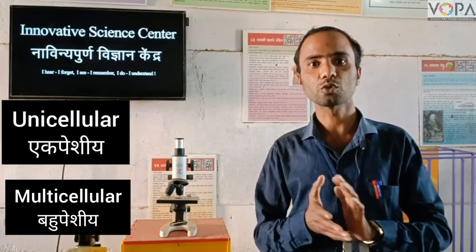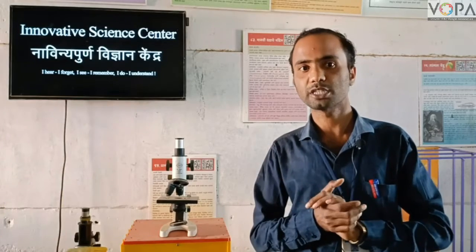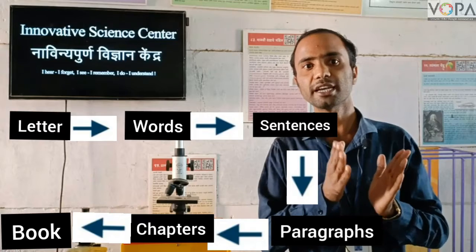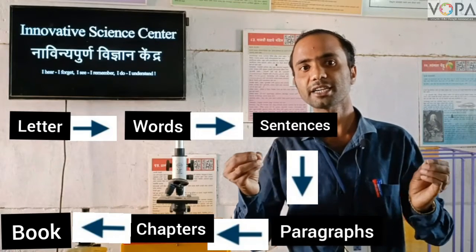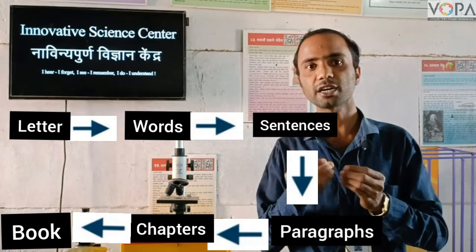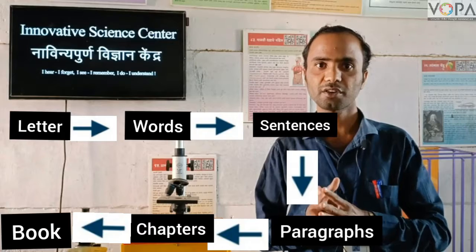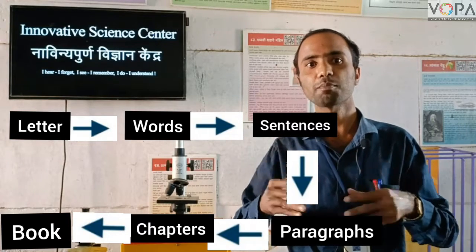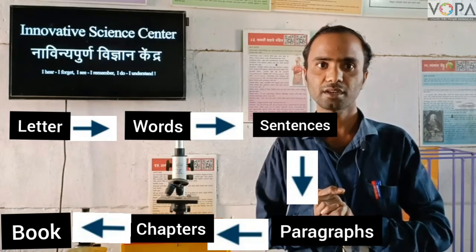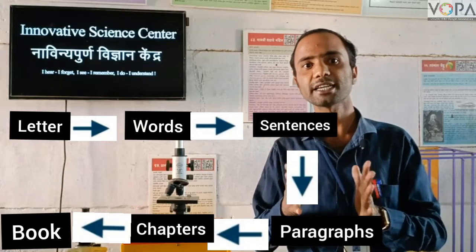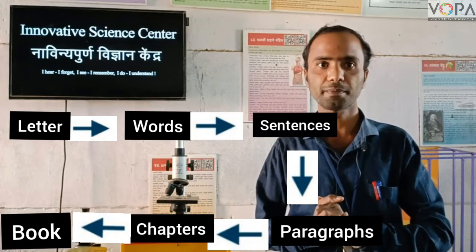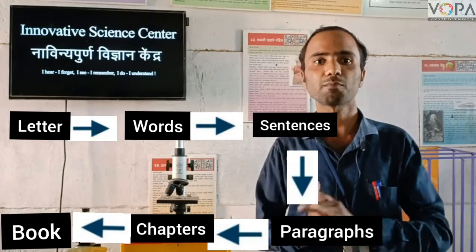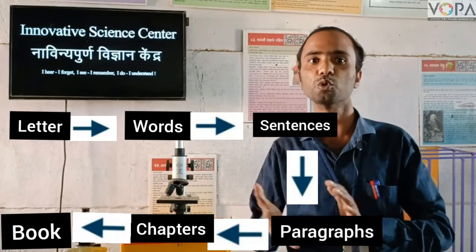Dear students, look at this flow chart. First, we see the letters. When different letters join together, they form the words. When different words join together, they form a sentence. Many sentences together form a paragraph, and many paragraphs together form a lesson or a book.